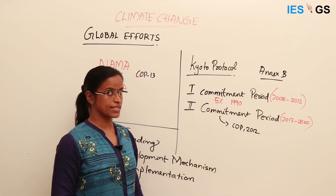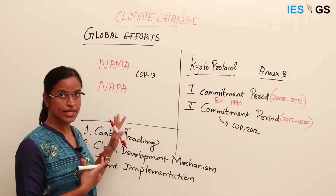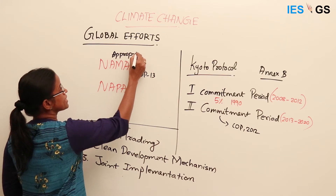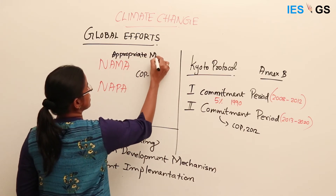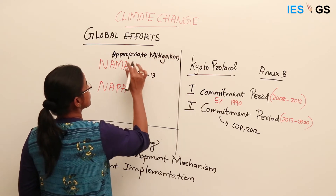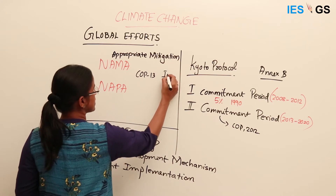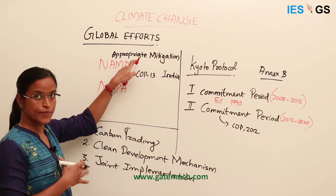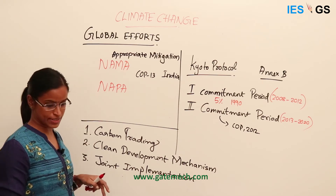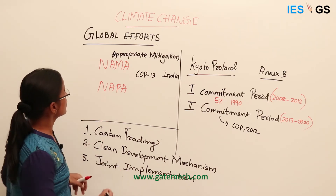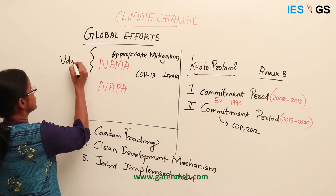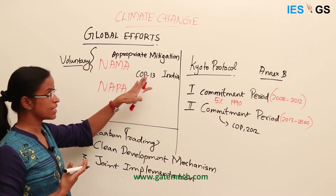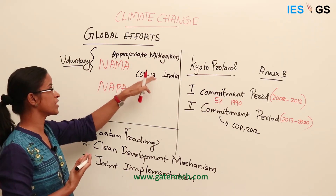For non-annexed countries, there are two different actions. First is Nationally Appropriate Mitigation Action (NAMA), adopted by developing countries like India and China. They are given flexibility to adopt mitigation plans that are appropriate for their economic and development conditions. These are not legally binding — they are voluntary — so if countries are not able to commit to their commitment, no action can be taken against them, but they are encouraged to individually take up voluntary mitigation actions.